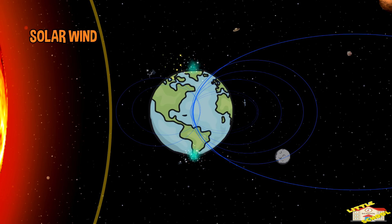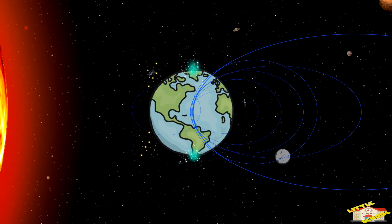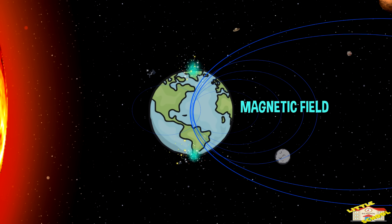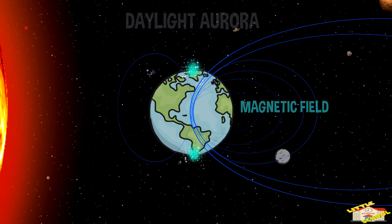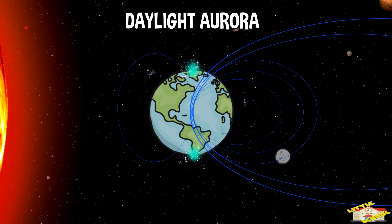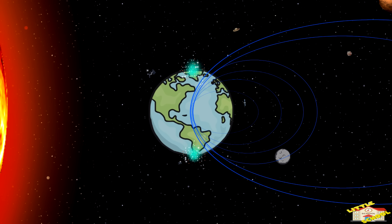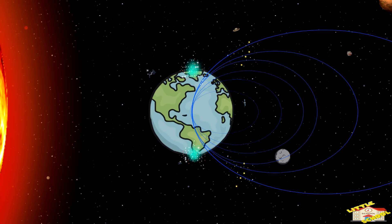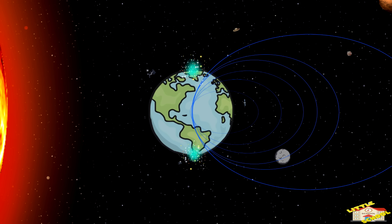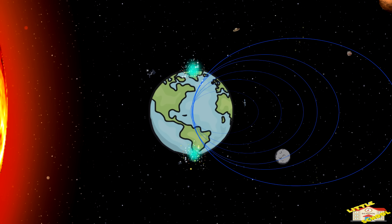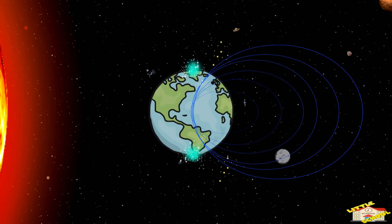An invisible shield — the Earth's magnetic field — will deflect the solar wind. Together, the magnetic fields create a funnel for the particles to stream through on the daylight side; this is the daylight aurora. The magnetic fields then stretch back and break, bringing gas from the solar wind to the night side.